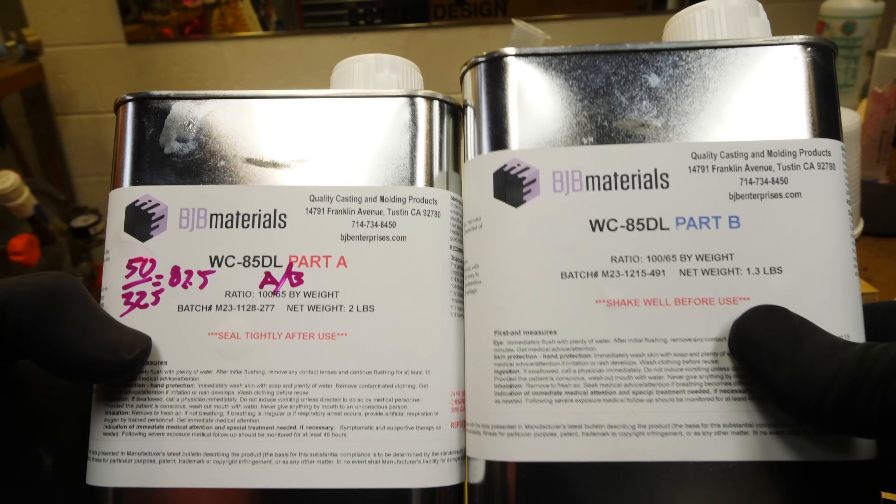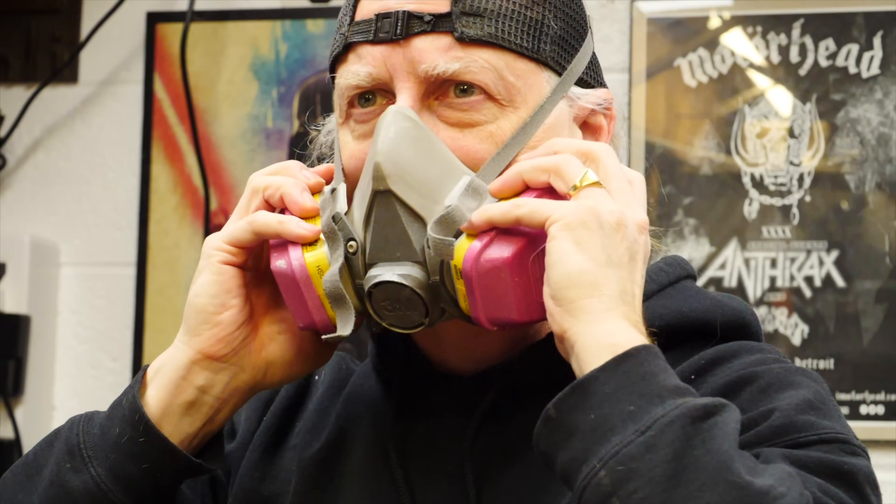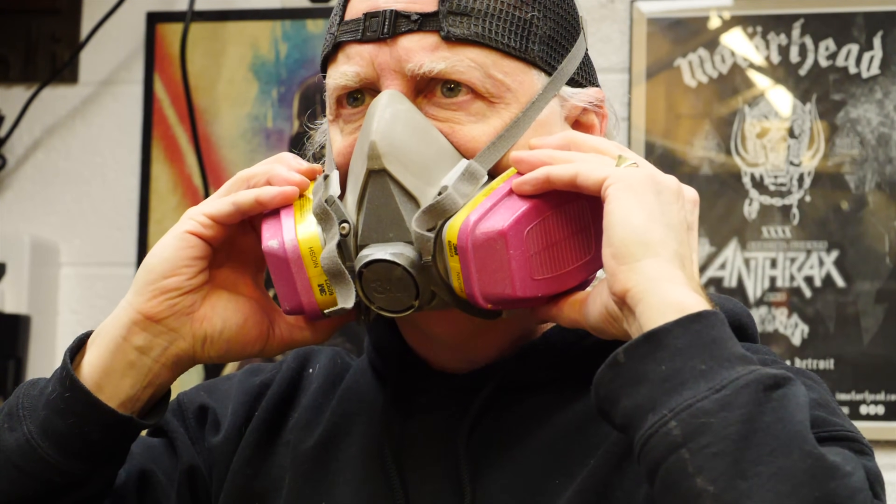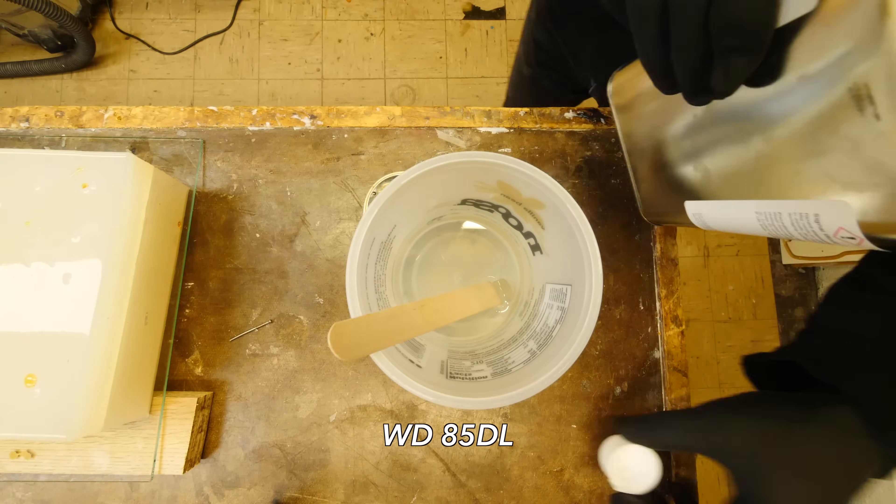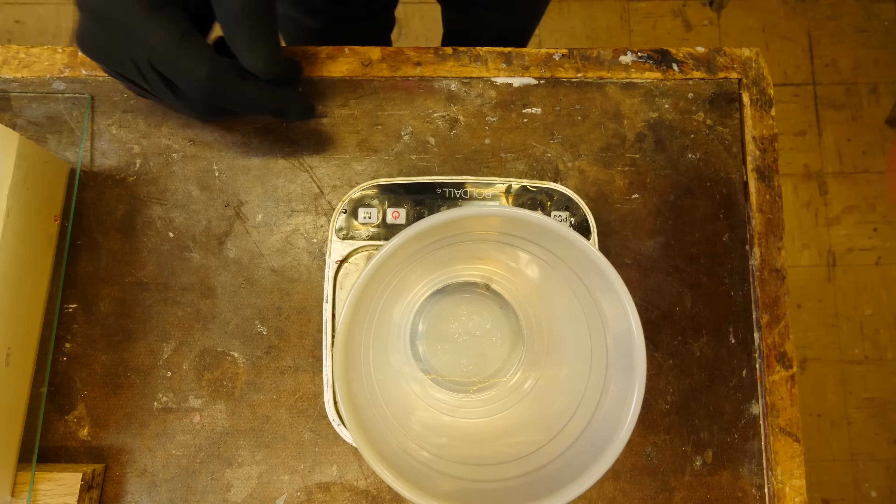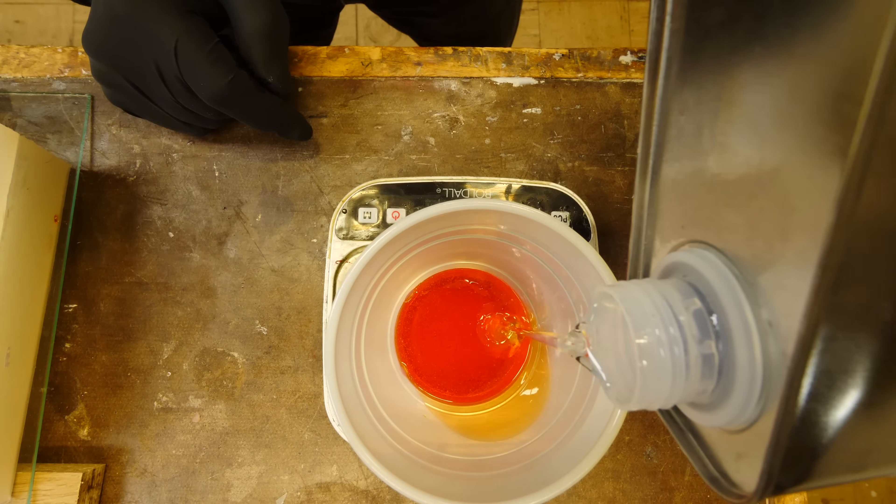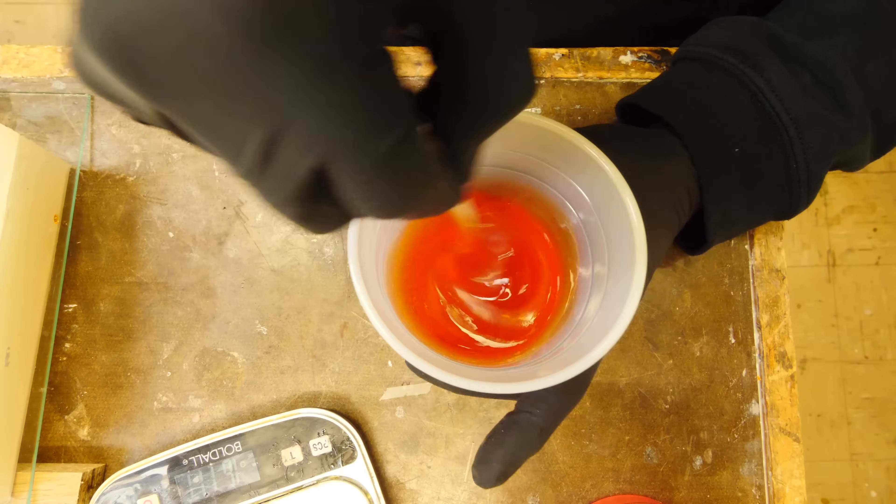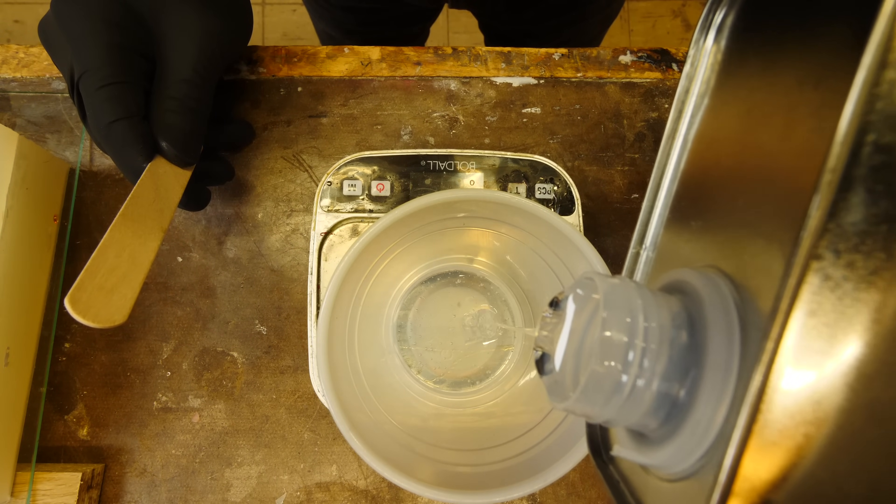So for this project we're going to use BJB WC85DL water clear resin. It's very thin and pours really nice. It has great UV stability and we'll be able to dye it with no problem to tint the lenses. I'm always wearing a respirator when I'm mixing up resin so that I'm safe. For the orange and the red parts we'll take the part B of the resin and we'll add color into that. That allows me to make a batch of color and have a unified color for all the parts.